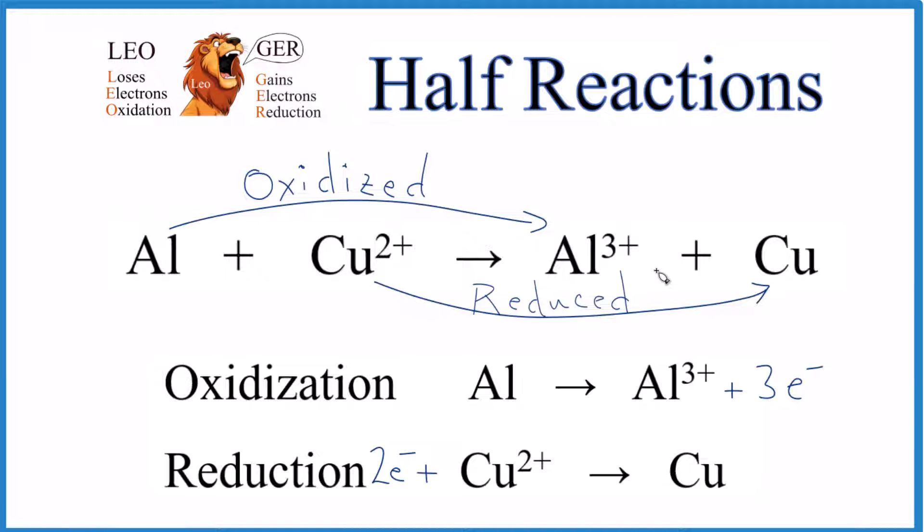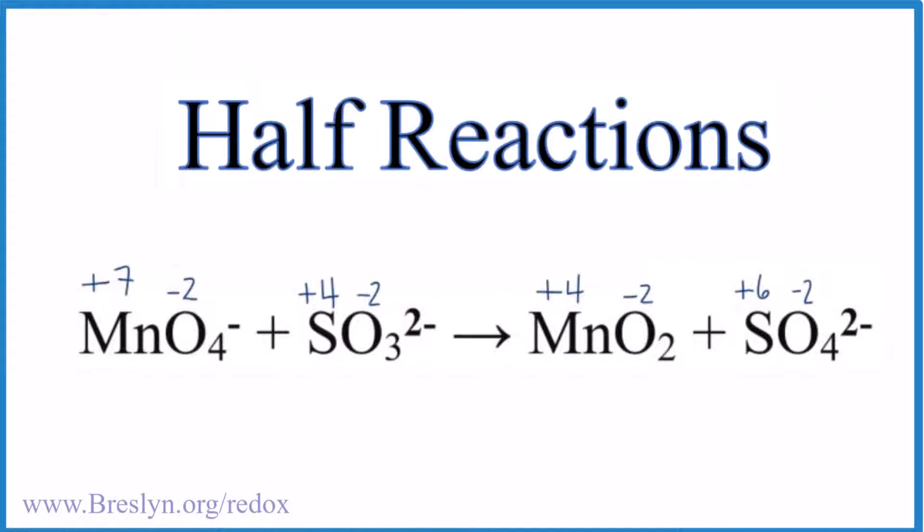Let's try something a little more challenging. So now it gets real, but it's the same process. We find the elements where the oxidation number changed. We figure out which one's oxidized and which one's reduced.